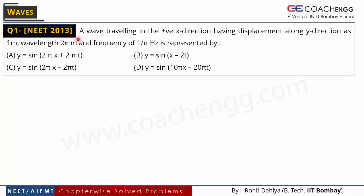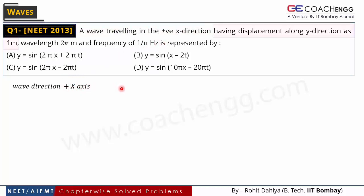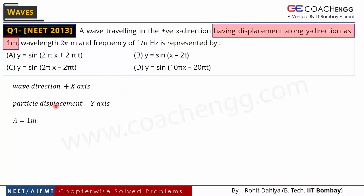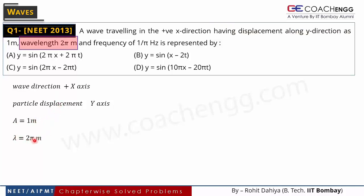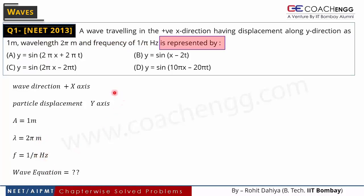The first question is from NEET 2013. A wave travelling in the positive x-direction having displacement along the y-direction as 1 meter. So the particle oscillates along the y-axis and its displacement amplitude is 1 meter — the particle moves between -1 to 1. Wavelength is 2π meters and frequency is 1/π hertz. This is the wave equation data we have been given.